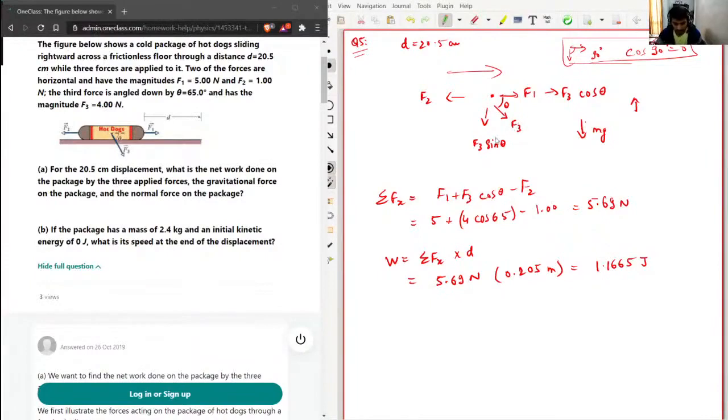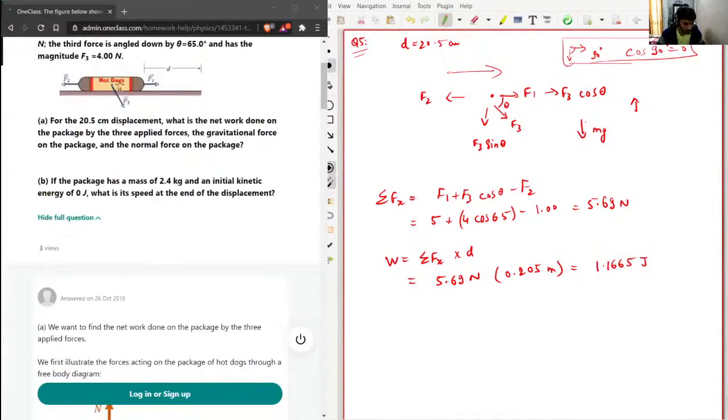So the first part is done. And if the package has a mass of 2.4 kilograms and an initial kinetic energy of zero joules, what is the speed at the end of the displacement?